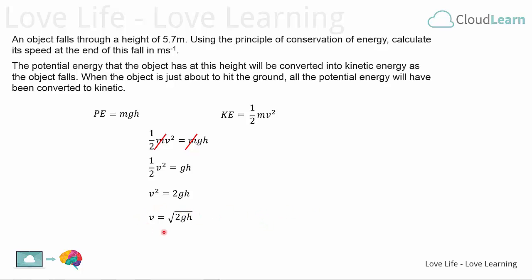Now we have an equation here that we can use to finally solve the problem. So let's put the numbers in. v will now equal the square root of 2 times 10, the acceleration due to gravity, times the 5.7, which is the height. That gives us the square root of 114, which finally gives us an answer of 10.68 metres per second.